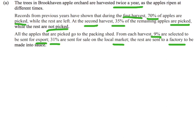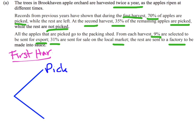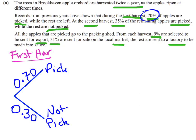We need to think about what decisions are being made. For the orchard owner, the first decision at the first harvest is: are we going to pick the apples or not pick the apples? That's our first layer. So we have our first harvest, and from that the apples are either picked or not picked. We know 70% are picked, so that's 0.70, which means 30% are not picked — 0.30. Remember, the probabilities go on the branches and the options go at the end of the branches.